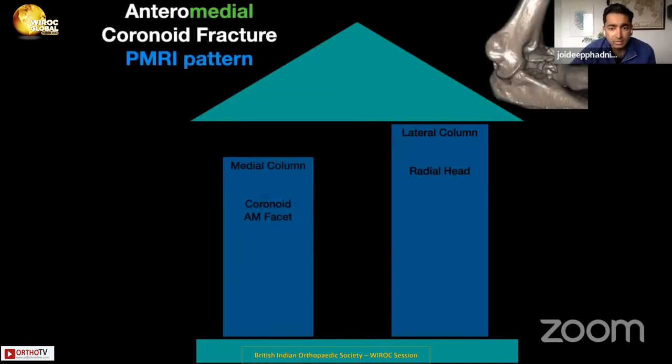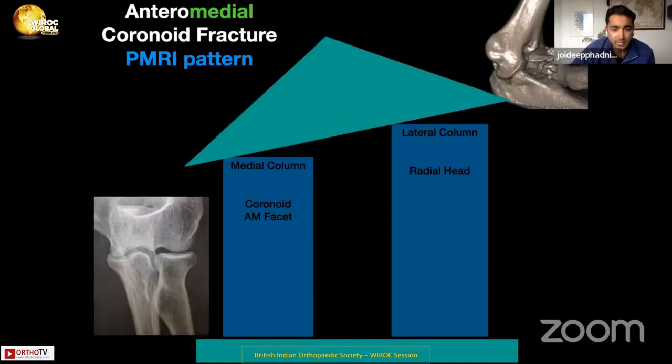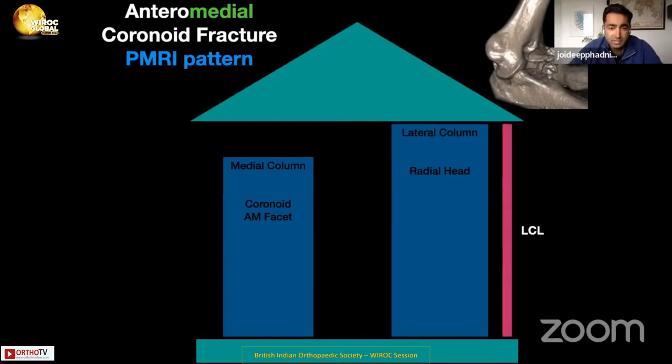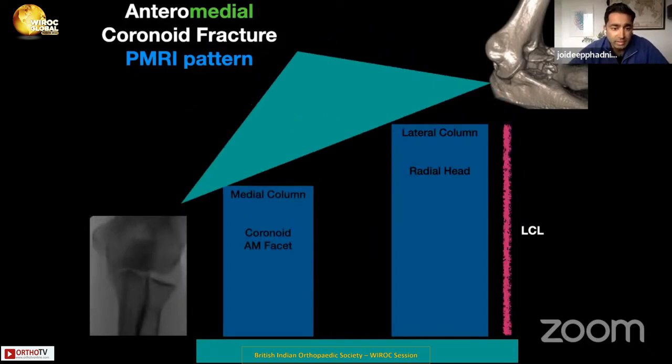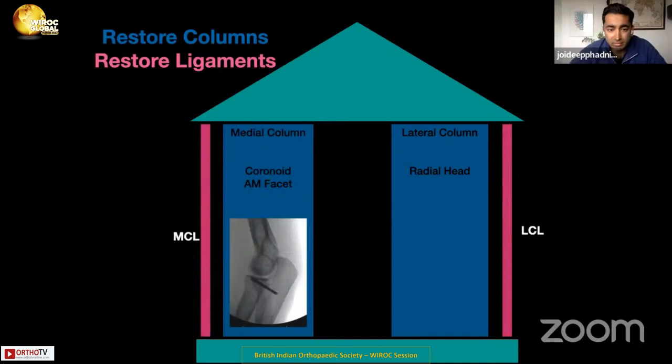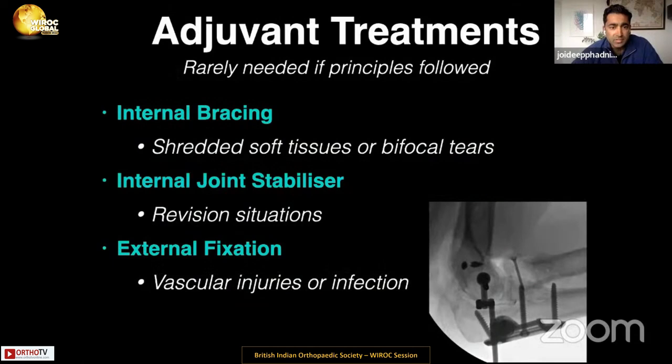For the anteromedial fracture: with a small anteromedial coronoid fracture, we get the posteromedial subluxation pattern, but robust lateral ligament fixation can provide a stable roof. With more severe coronoid fractures and a larger fragment, the lateral ligament alone won't account for persistent subluxation — these require fixing the coronoid, fixing the lateral ligament, and potentially fixing the medial ligament.